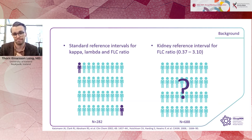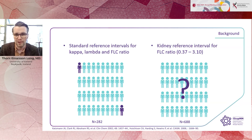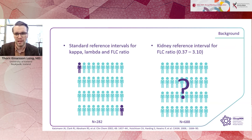This kidney reference interval has not been validated in individuals with monoclonal gammopathies other than myeloma, nor in individuals with mildly impaired kidney function. So there is a whole spectrum of both kidney disease and monoclonal gammopathies for which we don't have much data.